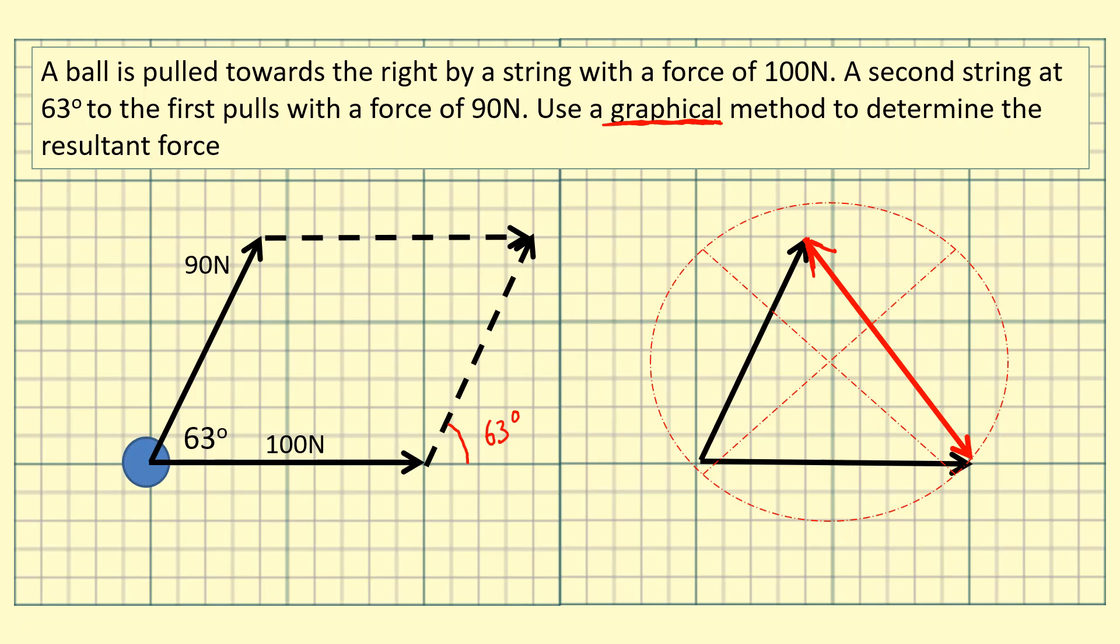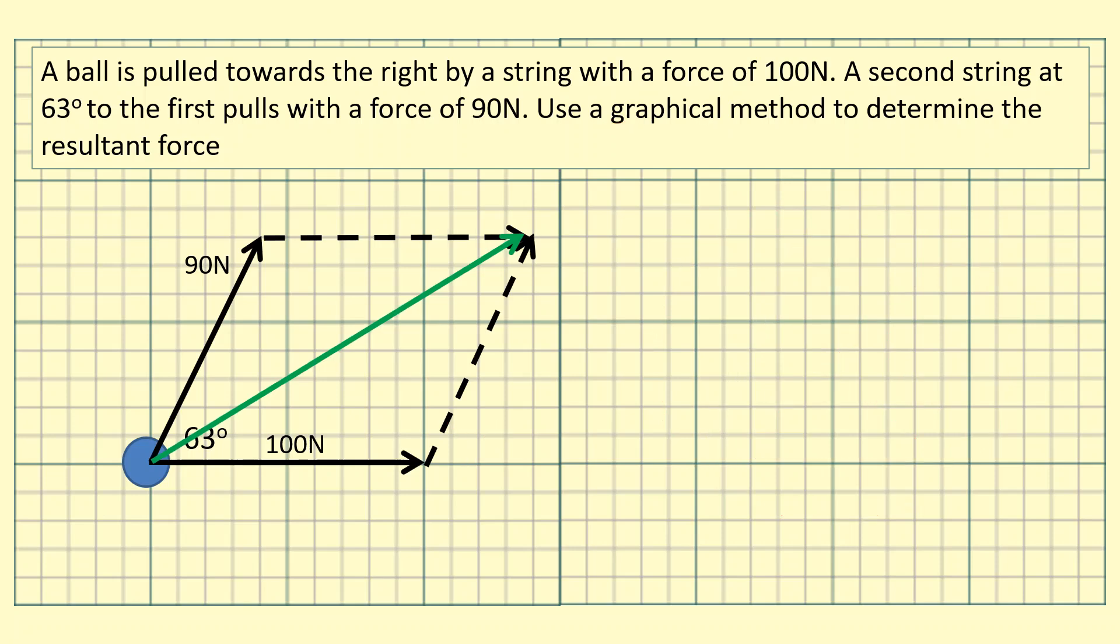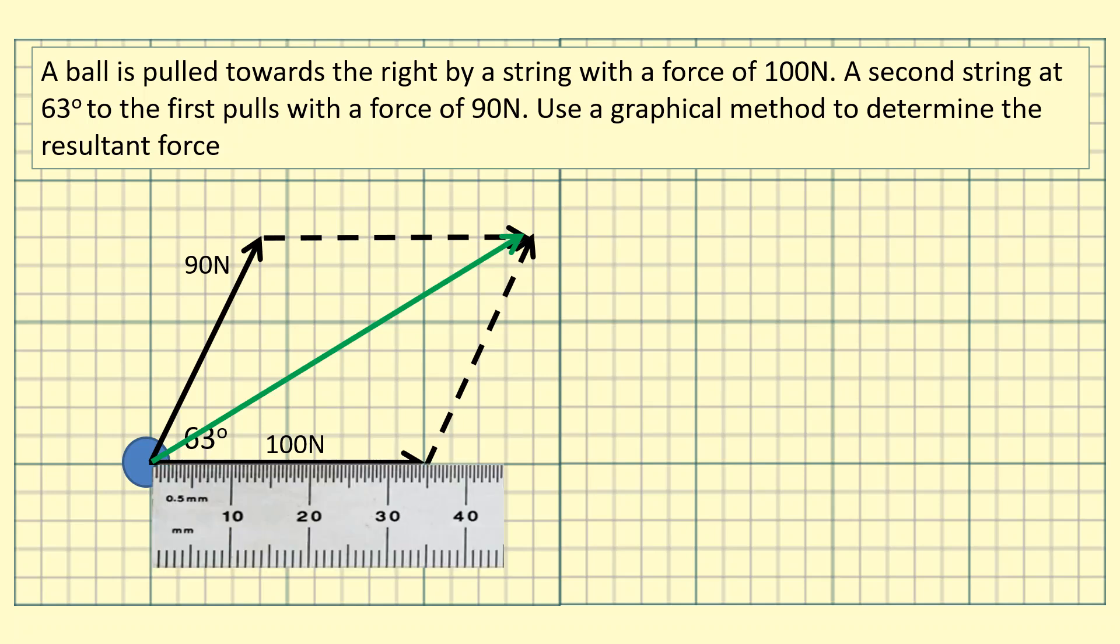Make sure that's the same length, for example if you count squares it's four across and eight up. The resultant force will be from the tail to the tip like so. To find the magnitude of the resultant you need to come up with a scale. If I measure this I see that 35 millimeters is equal to 100 Newtons.